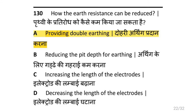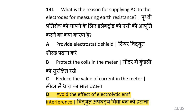How can earth resistance be reduced? That is by providing double earthing. What is the reason for supplying AC to the electrodes when measuring earth resistance? That is to avoid the effect of electrolytic EMF.